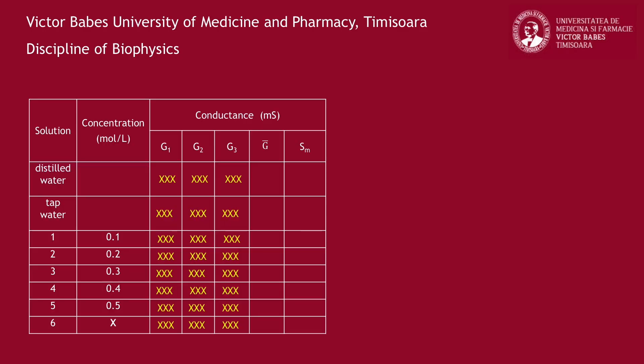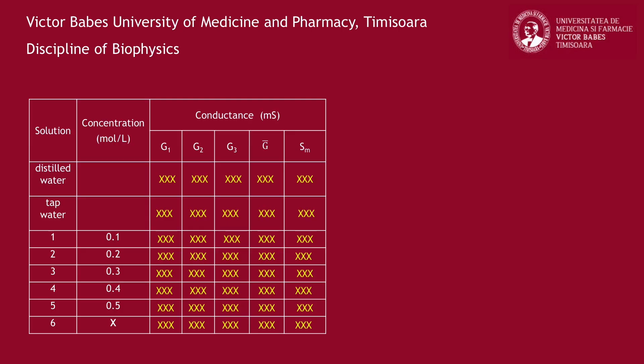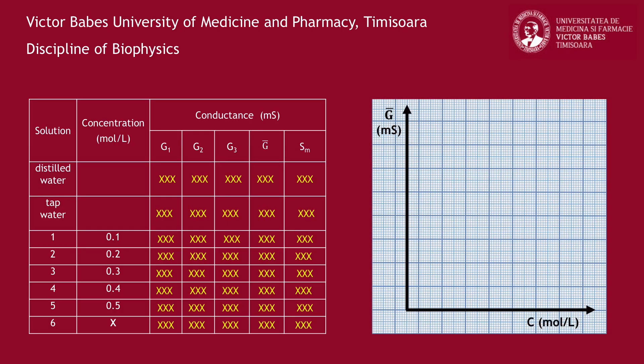Calculate the mean values of the electrical conductance for each solution and their corresponding standard errors. Plot the conductance as a function of potassium chloride concentration. After drawing the calibration curve, by linear interpolation, determine the unknown concentration of the last potassium chloride solution.